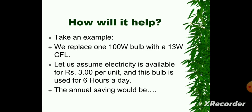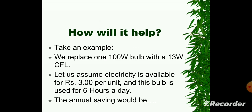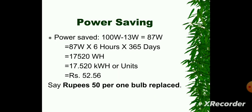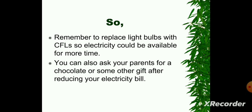How will it help? Take an example: we replace a 100W bulb with a 13W CFL. Assuming electricity costs Rs. 3 per unit and the bulb is used for 6 hours a day, the annual savings would be Rs. 52.56. Remember to replace light bulbs with CFLs so electricity could be available for more time. You can also ask your parents for a reward after reducing your electricity bill.